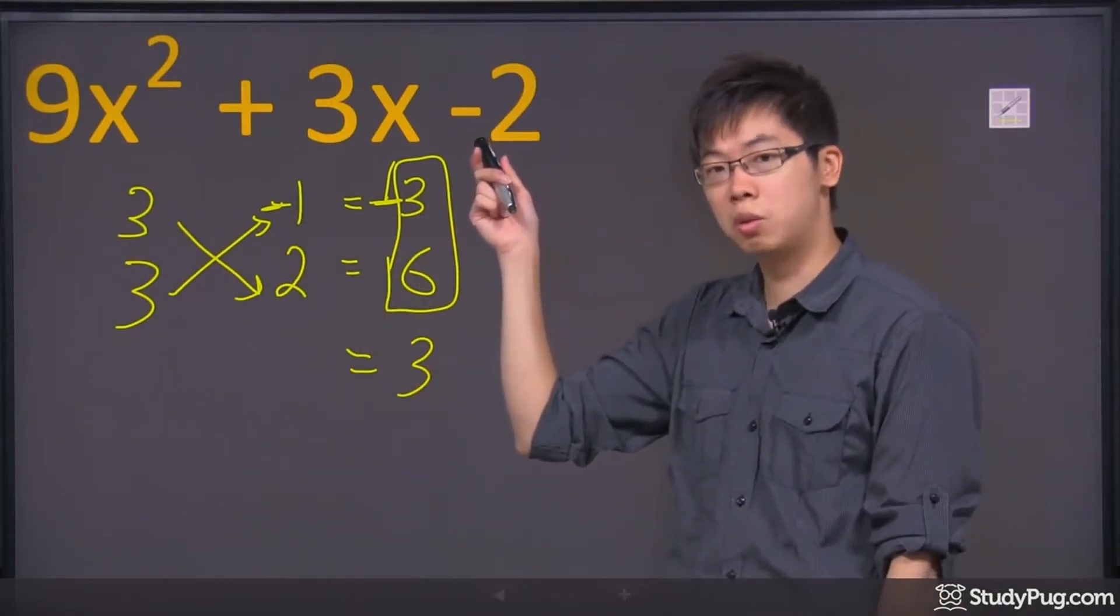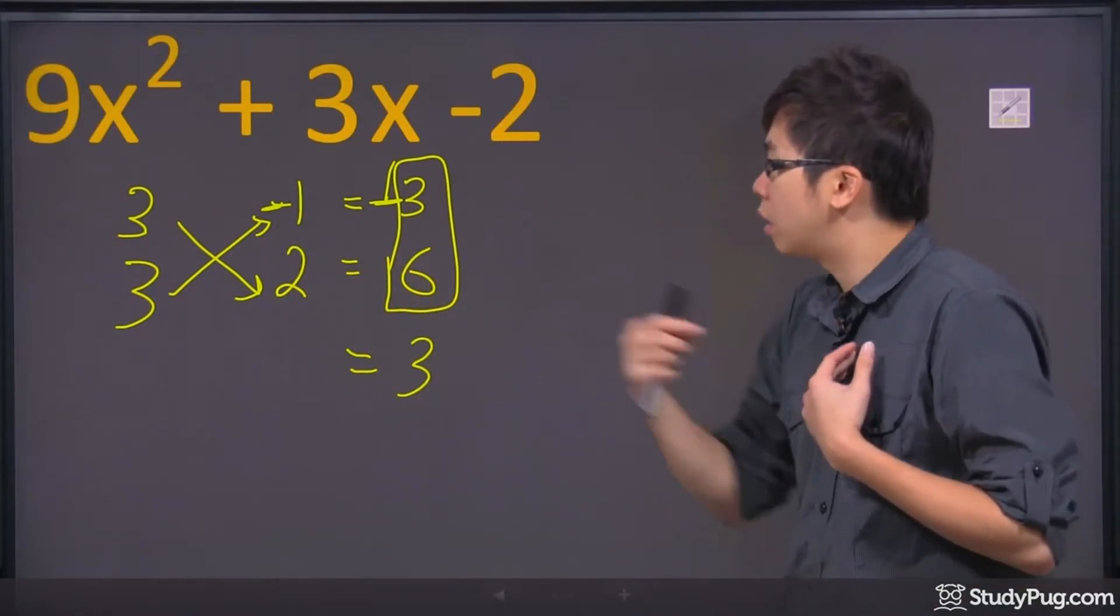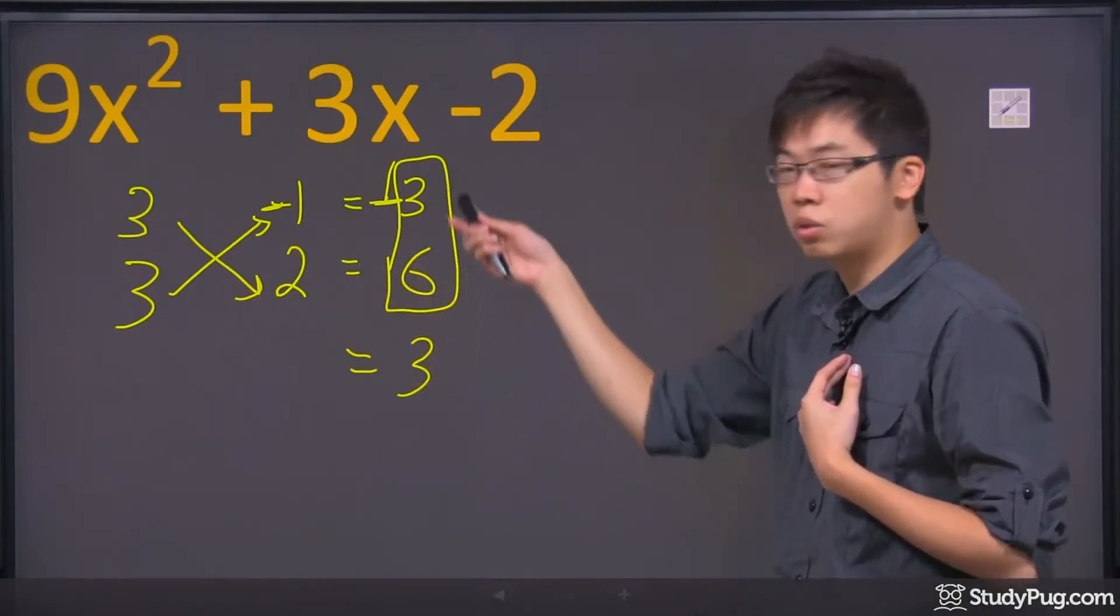These two numbers here are the factors of the 2, but remember this one? It was a negative, right? So one of them has to be negative, but we weren't sure yet. So that's why I just do the math and I look at the answer over here.